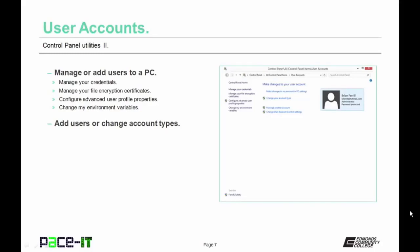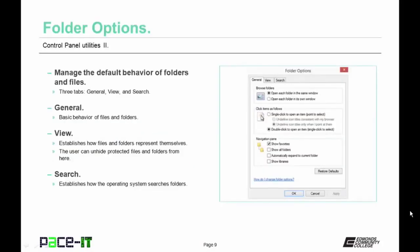The User Accounts utility manages or adds users to a PC, manages credentials, manages file encryption certificates, configures advanced user profiles and properties, and changes environmental variables for the system. The Folder Options utility is of special importance to a technician. From here, you can manage the default behavior of folders or files. There are three tabs: General, View, and Search. The View tab is especially important for technicians — you can unhide protected files and folders from here. The Search tab establishes how the OS searches folders.